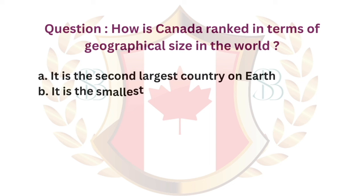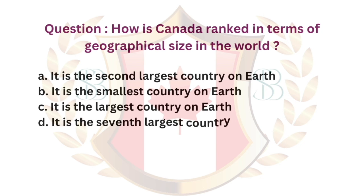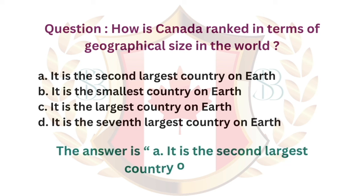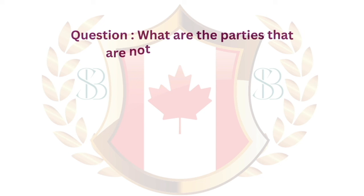Question. How is Canada ranked in terms of geographical size in the world? a. It is the second largest country on earth. b. It is the smallest country on earth. c. It is the largest country on earth. d. It is the seventh largest country on earth. The answer is a. It is the second largest country on earth.